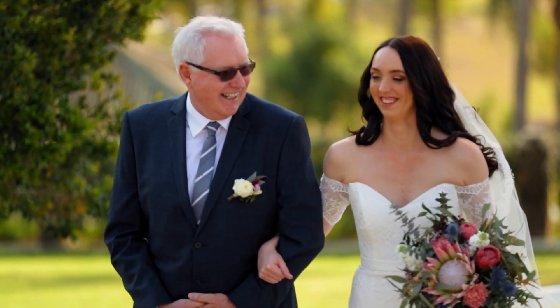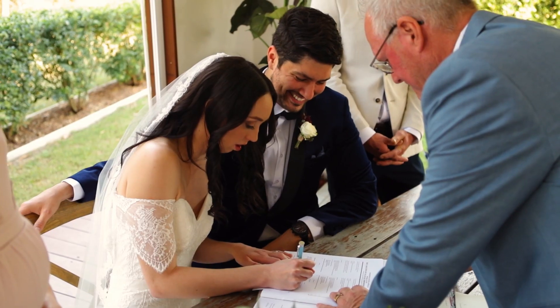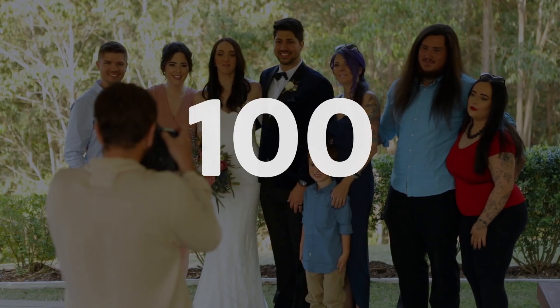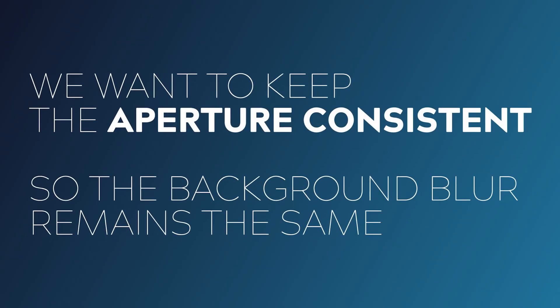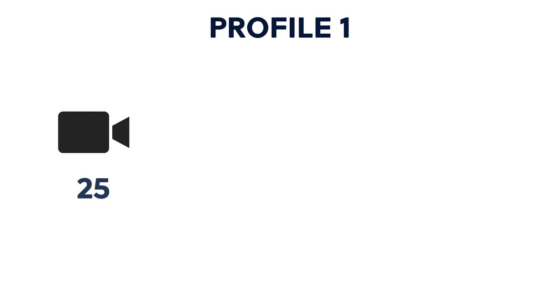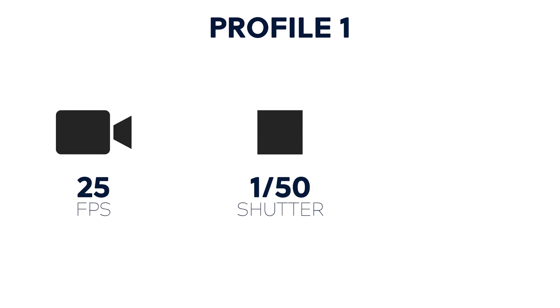Let's give you a real world example where we bring it all together. Let's say we're shooting a wedding and we want to move quickly in a run-and-gun situation. We want to shoot at three different frame rates: 25 frames per second for normal speed, 50 frames per second for slow motion, and 100 frames per second for extra slow motion. We'll keep our aperture consistent so our background blur looks the same in all shots, and change shutter speed to adhere to the 180 degree rule, compensating with ISO. For our base profile: 25fps, 1/50th shutter, ISO 100.